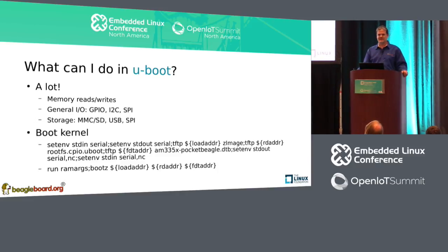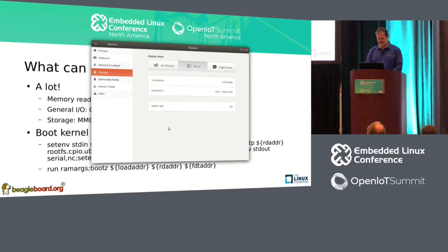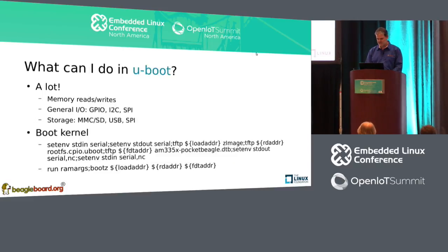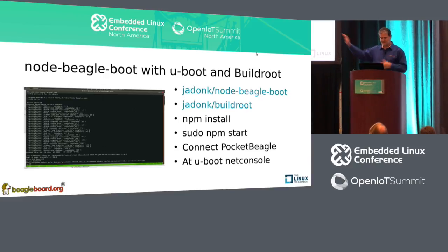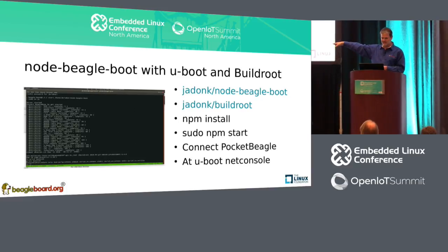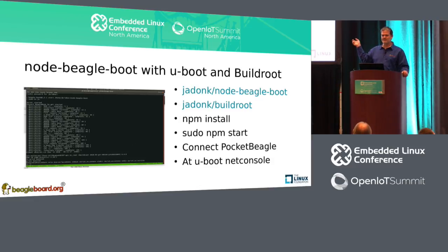Then I can interactively run these last few things. The run-ramargs just sets up the boot args — I'll show you that sets up the boot args for the kernel — and then bootZ actually loads and runs the kernel. This is where to get the code: my GitHub, node-BeagleBoot, it's on the net console branch. I've got it referenced by a Buildroot build, so I can build everything all in one place: my kernel, my root file system, everything. So I have something nice and reproducible.